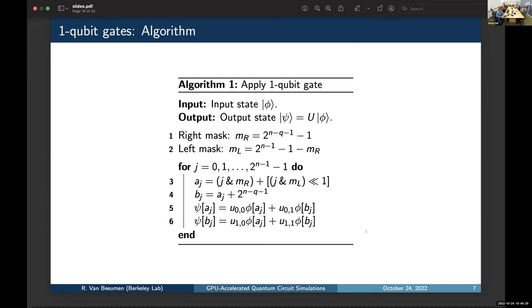So, here is the overall algorithm. It's a very simple algorithm, just contains one for loop. So, we define the masks. Then, in every iteration, we just compute the indices a_j and b_j. And then, we do the local two-by-two operations.